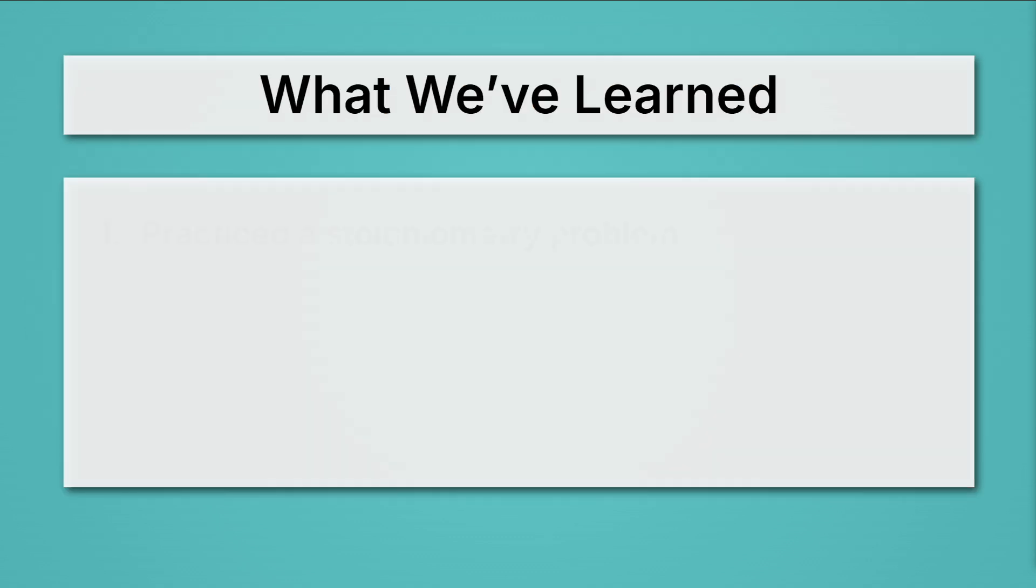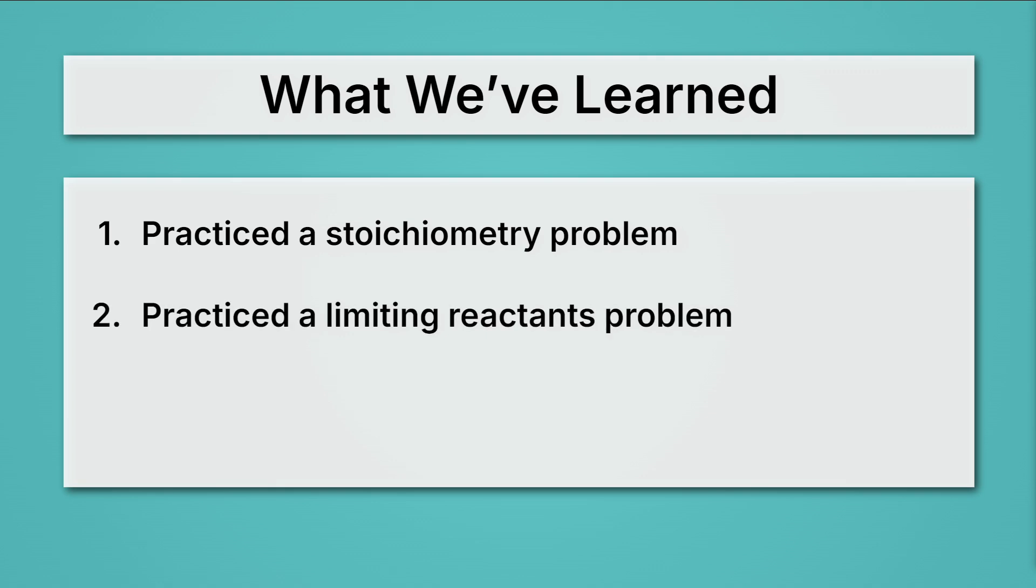Let's review what we've learned. First, we practiced a stoichiometry problem, where we calculated how much product you could make if we had an excess of one of our reactants. Then we practiced a limiting reactants problem. And there we saw that if we were given quantities for both reactants going into a chemical reaction, we have to see which one runs out first to find the theoretical yield. Lastly, we practiced calculating percent yield, where we compared how much we actually got to how much we could have gotten if things went perfectly.